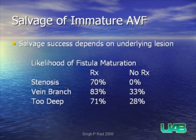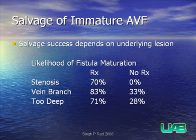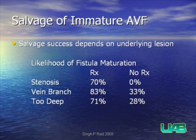The salvage success depends on the underlying lesion. For stenosis that is not treated, 0% will become clinically usable; if the stenosis is treated, 70% can go on to mature. If there is a large competing vein branch, 83% will subsequently be usable if corrected. And if there is a superficialization procedure for a deep draining vein, 71% of these will eventually have a useful hemodialysis fistula.